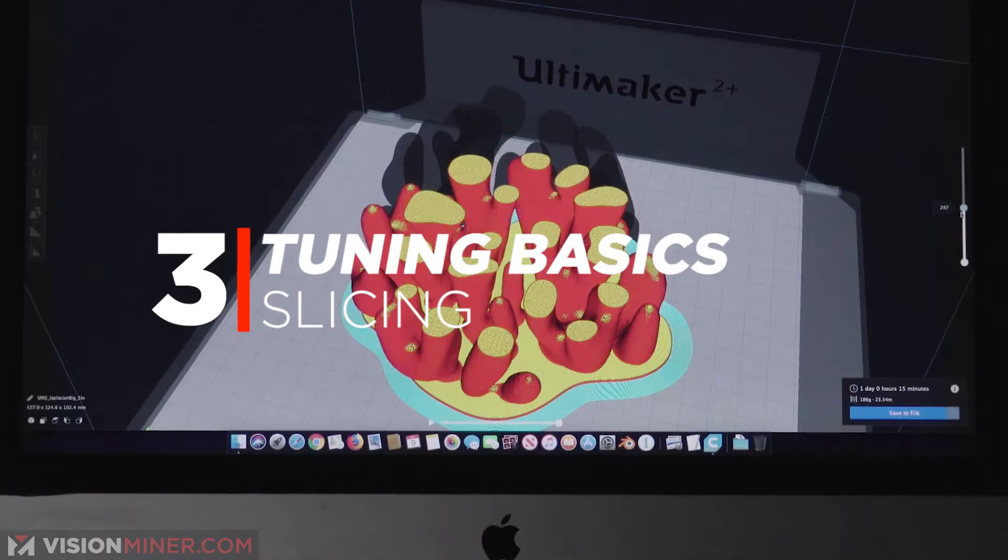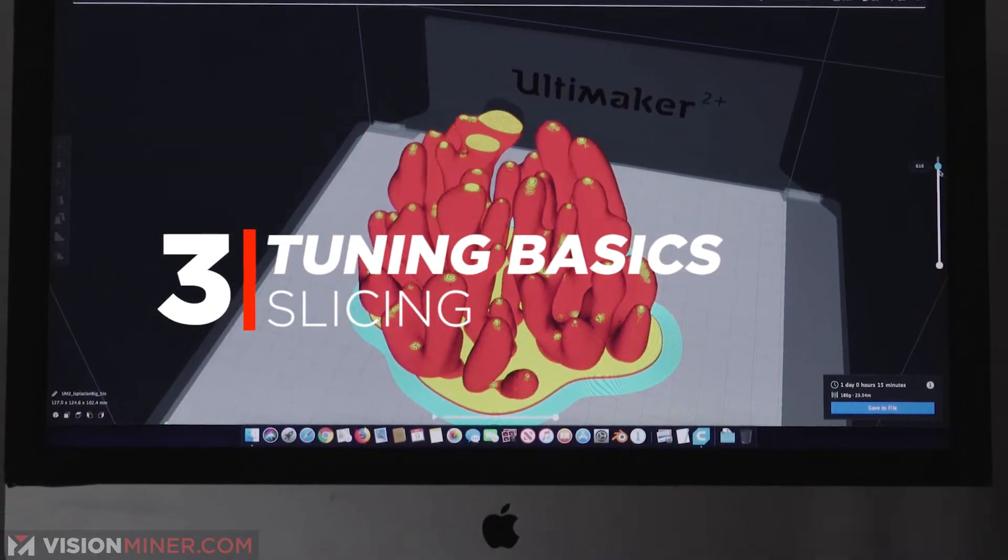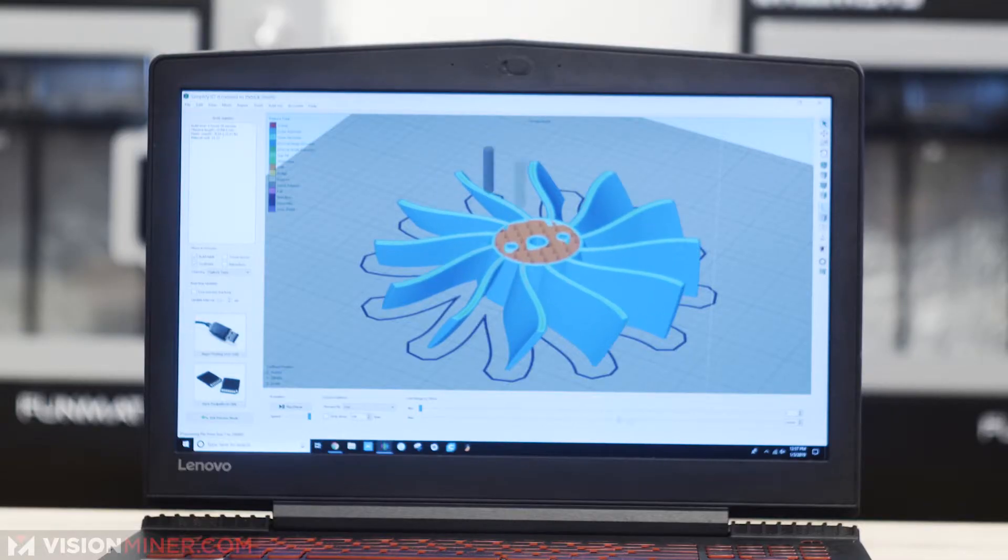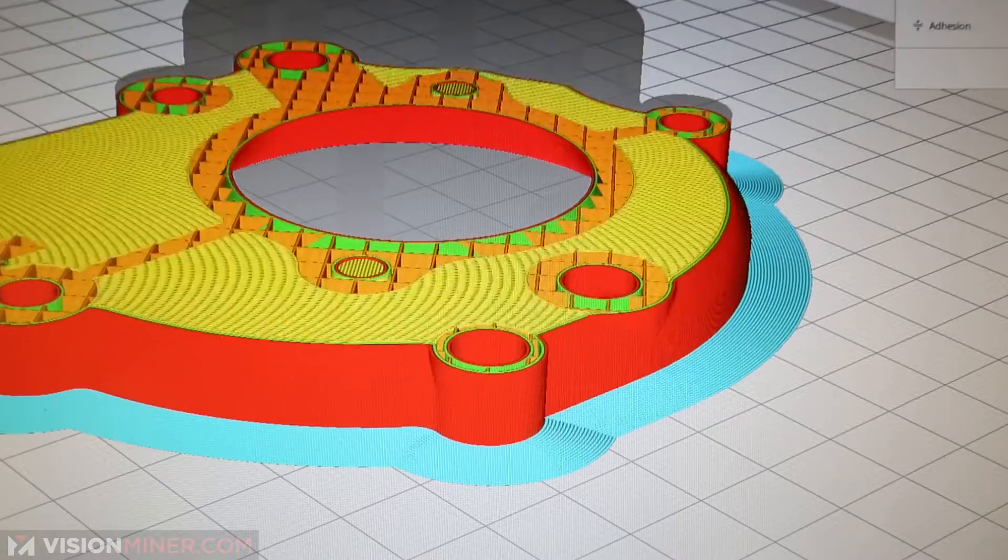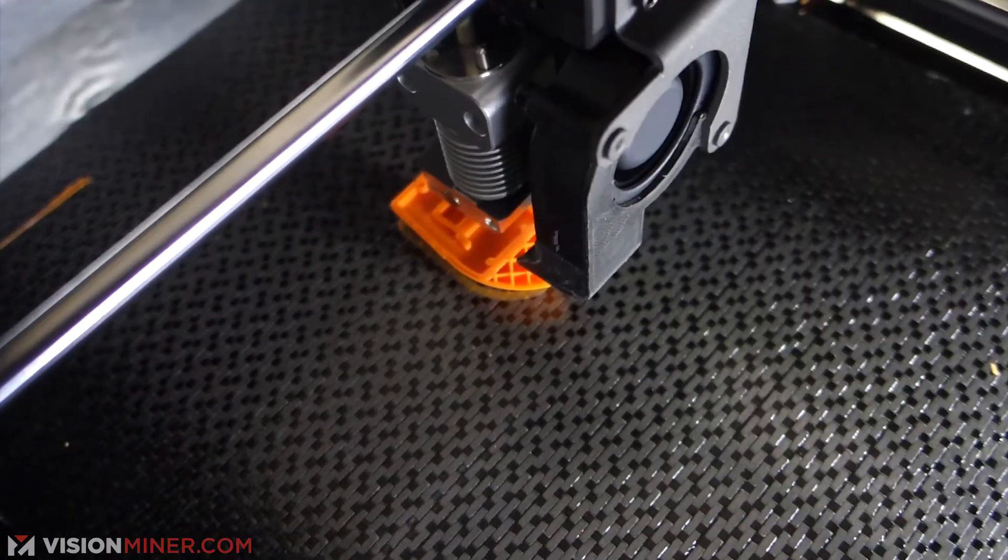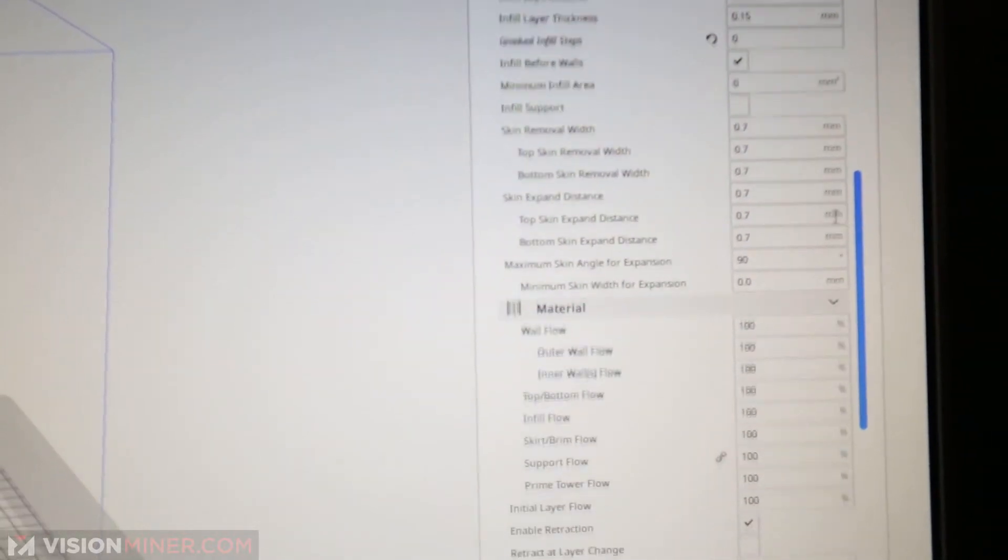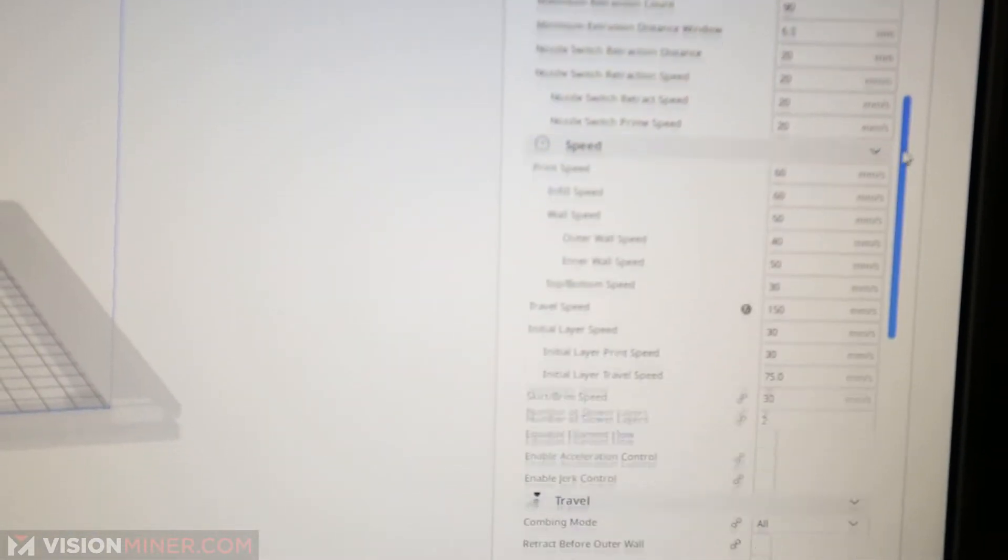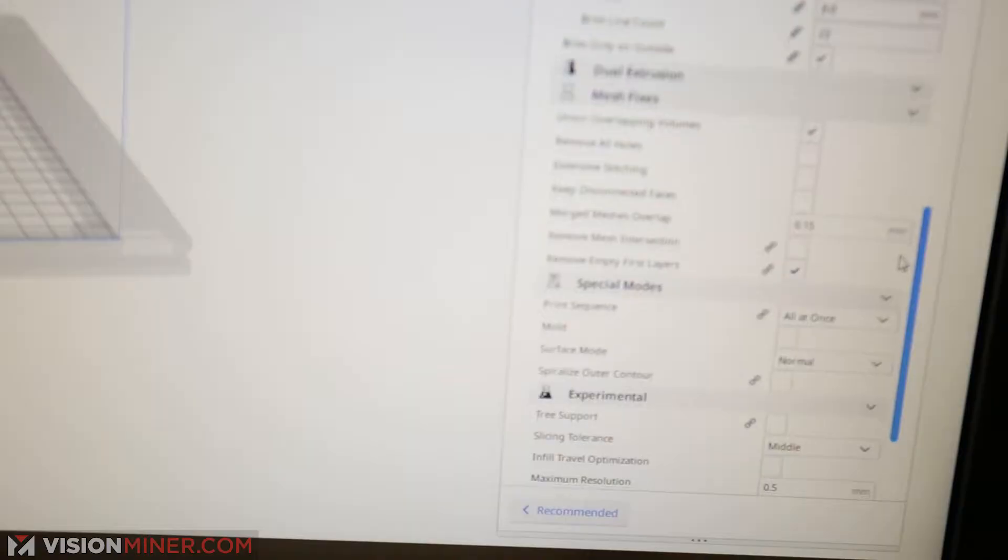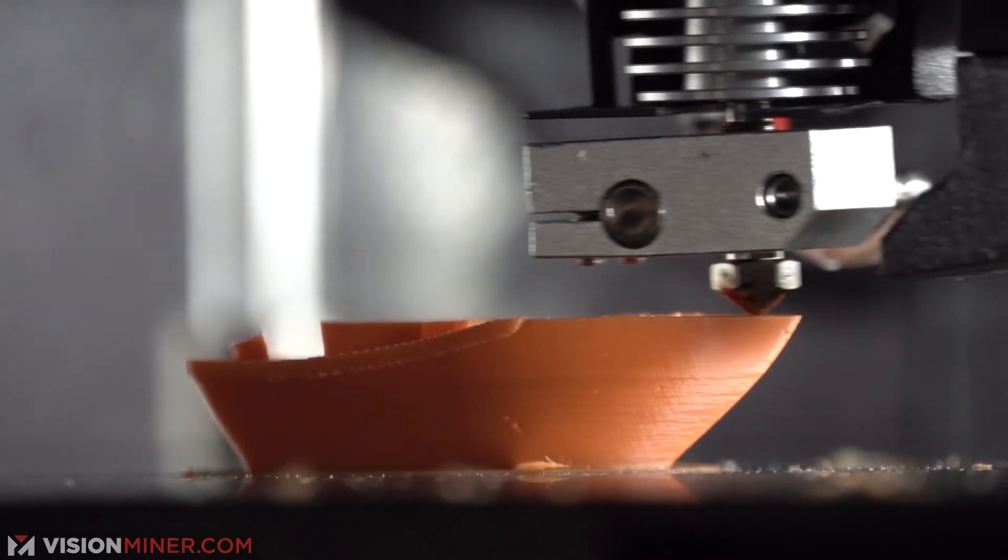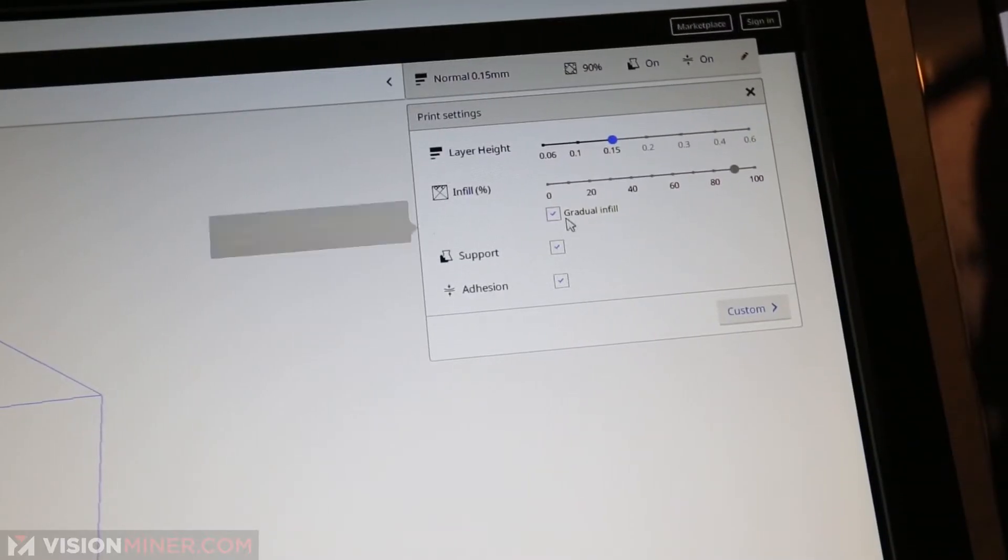So number three, slicing. Slicers are software that turn a 3D model into a toolpath. A toolpath is basically code which tells the 3D printer where to move. This is where tuning comes in. There are thousands of settings that the operator needs to tune in order to print properly. For basic materials most slicers also have a beginner option but this doesn't always work that great.